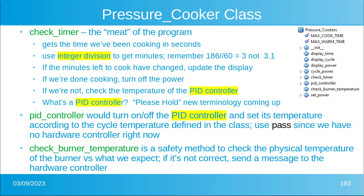In the pressure cooker class, check timer is really the meat of the program, if you don't mind my pun. It gets the time that we've been cooking in seconds and uses integer division to translate that into minutes. If we still have some minutes left to cook, then go ahead and update the display. If we're done cooking, turn off the power. If we're not done cooking, check the temperature of the PID controller.